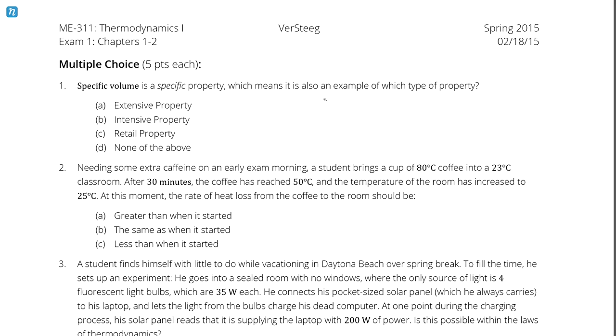Question number 1. Specific volume is a specific property, which means it is also an example of which type of property? A. Extensive. B. Intensive. C. Retail. Or D. None of the above. Well, first of all, we can eliminate retail, which simplifies the problem to, is specific volume extensive, intensive, or neither? And I think that the easiest way to approach this problem is to think back to what a specific property is.